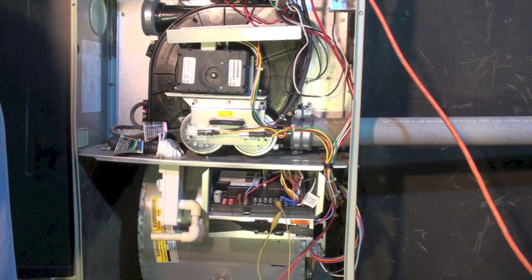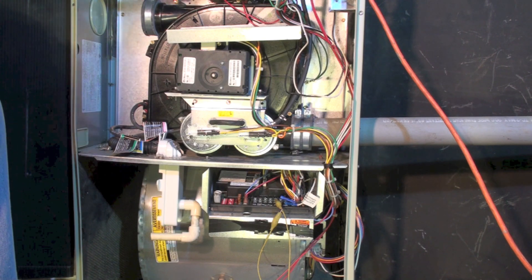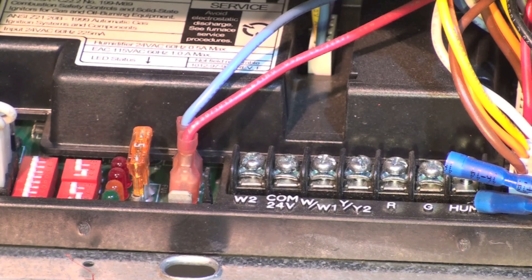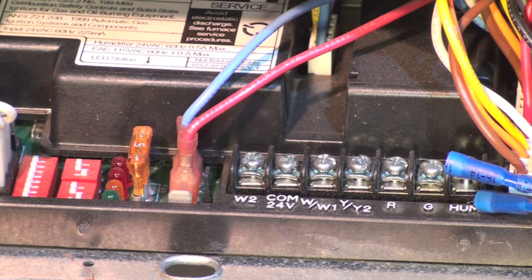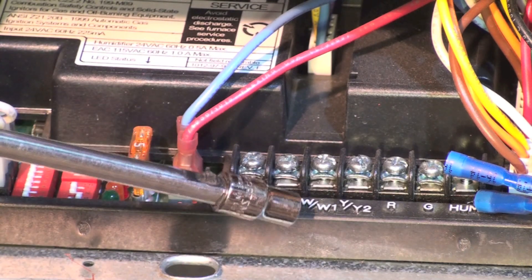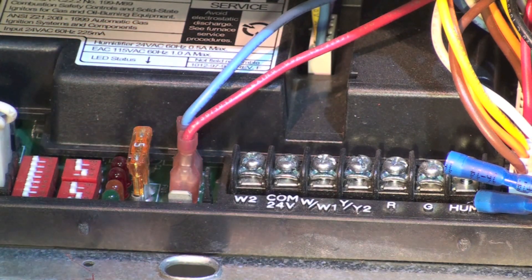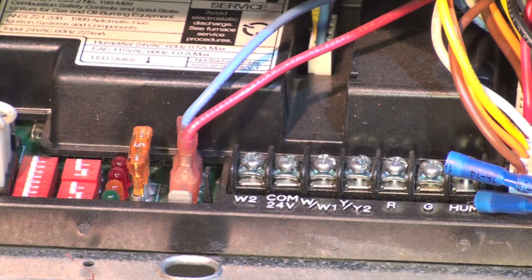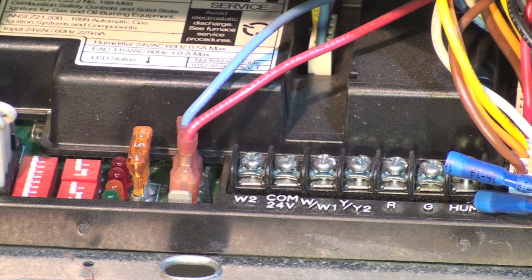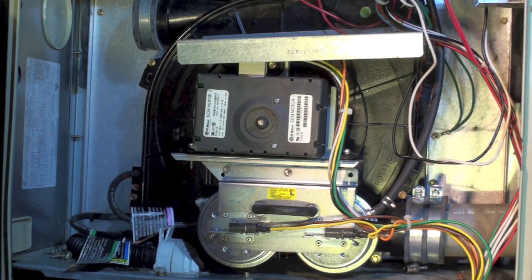Let's talk about what's going to happen when I get a call for heat. The first thing I'm going to do is give a call for first stage heat, so I'm going to put a jumper between R and W slash W1. That will bring on the inducer and start the sequence.